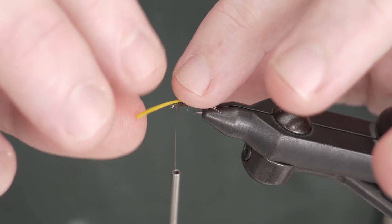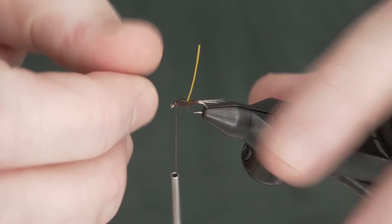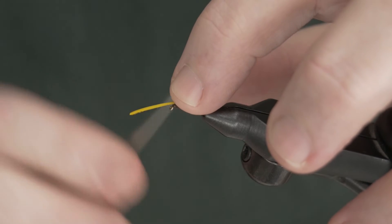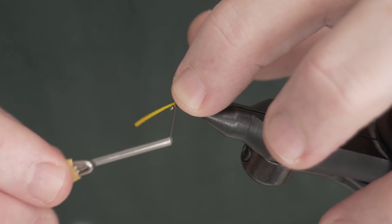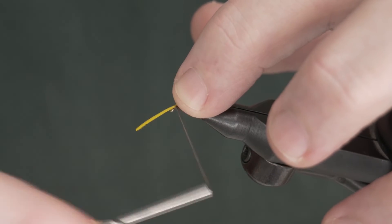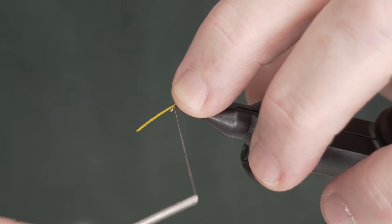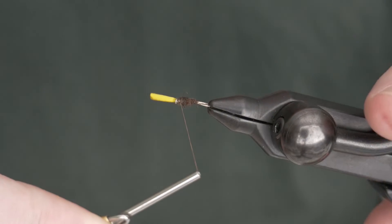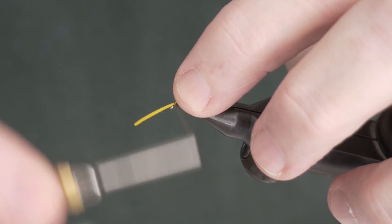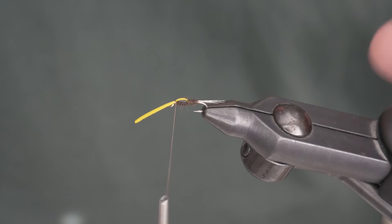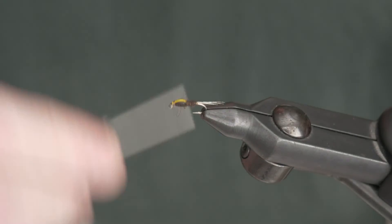Once we have that trimmed off, we're going to take our goose biot and fold it over the top. We want to try to keep this as centered as we can over that nymph skin. Thread one on a little weird. Doesn't look too bad. A few wraps to secure it and then we're going to cut our biot and build the head.